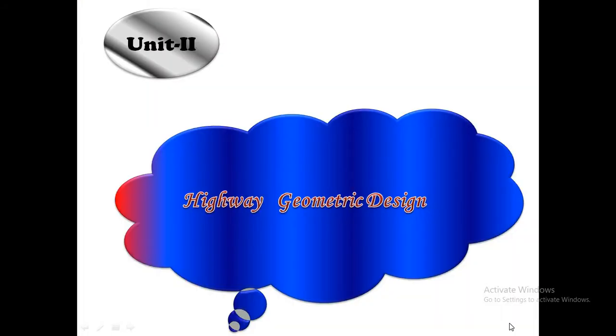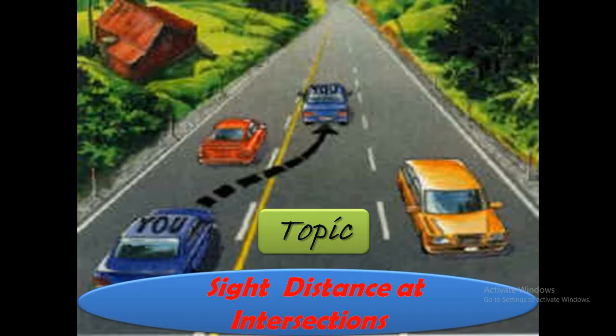This is highway geometrical design. Last few days we have been discussing some topics from the unit, and today we will discuss the topic that is sight distance at an intersection. This is another important topic in side distances. We have already discussed SSD — stopping sight distance — and OSD — overtaking sight distance — and this is the third one: sight distance at an intersection.